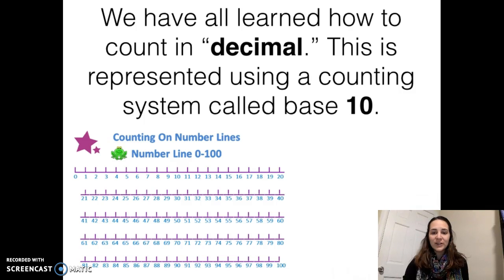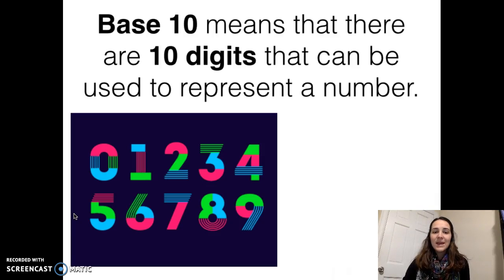So far in your life, you've probably learned how to count using something called decimal. This is represented using a counting system that's called base 10. You might see something like this in an elementary school classroom teaching students how to count in base 10. In base 10, this means that there are 10 digits that you can use to represent a number. Those 10 digits are the digits 0 through 9.